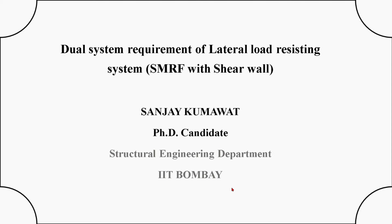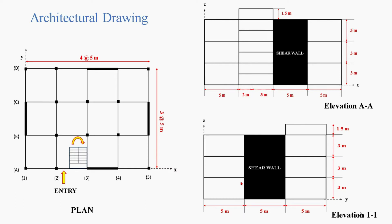In this video we are going to see how to satisfy the dual system requirement of a lateral load resisting system which comprises of SMRF with shear wall — that is Special Moment Resisting Frame along with the shear wall. This is the example considered: a three-story building which consists of shear wall along with moment resisting frame. The shear walls are distributed symmetrically along the four sides of the building as seen in this plan.